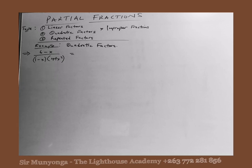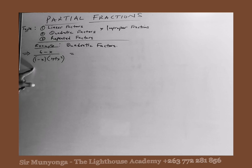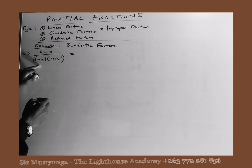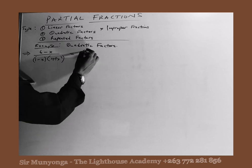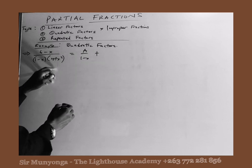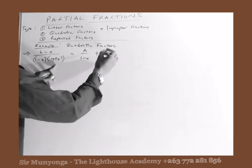We are looking at quadratic factors, where we have a scenario whereby the denominator contains a quadratic factor. We are working with an example: 6 minus x over a denominator that has a linear factor and a quadratic factor. When the denominator is a linear factor, the numerator will be a constant. But when the denominator is a quadratic factor, the numerator must be a linear factor.